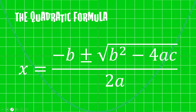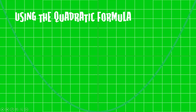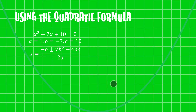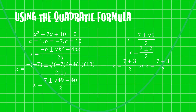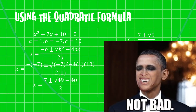Now let's actually use the quadratic formula. Here's our quadratic: a equals 1, b equals negative 7, c equals 10. Substituting into the formula gives 7 plus-minus the square root of 49 minus 40, over 2. That simplifies to 7 plus-minus the square root of 9 over 2, which is 7 plus-minus 3 over 2, giving x equals 5 or x equals 2.